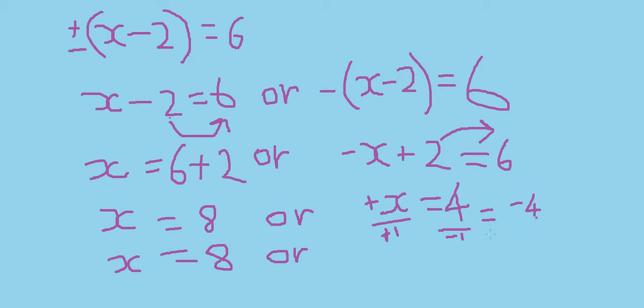4 divided by negative 1 is negative 4. So x is equal to 8, or x equals to negative 4.